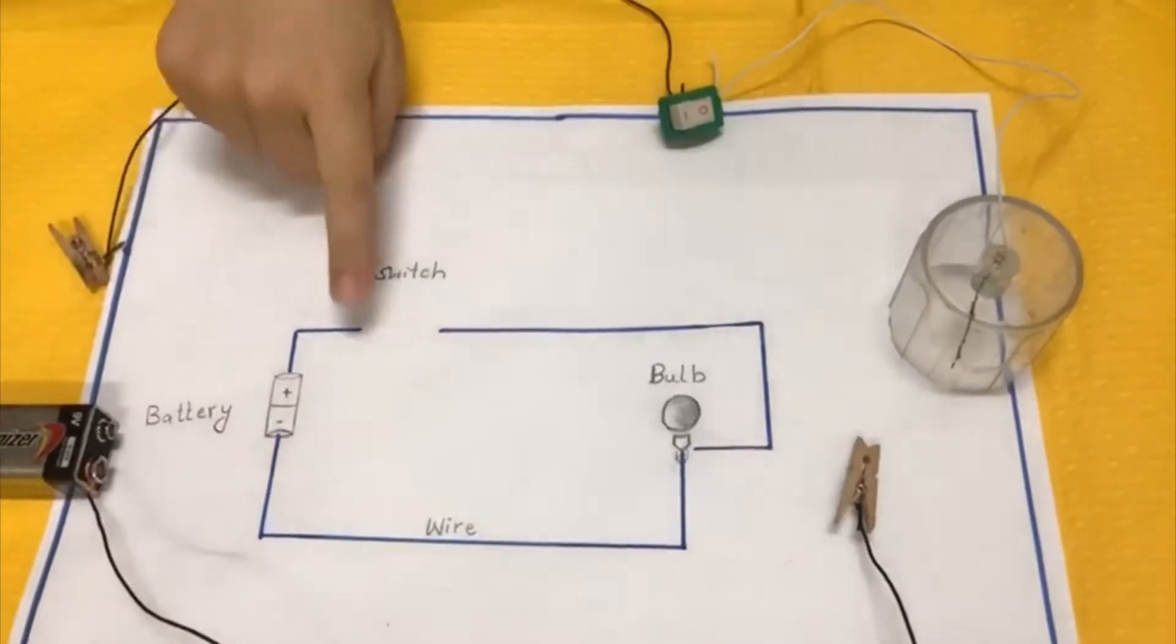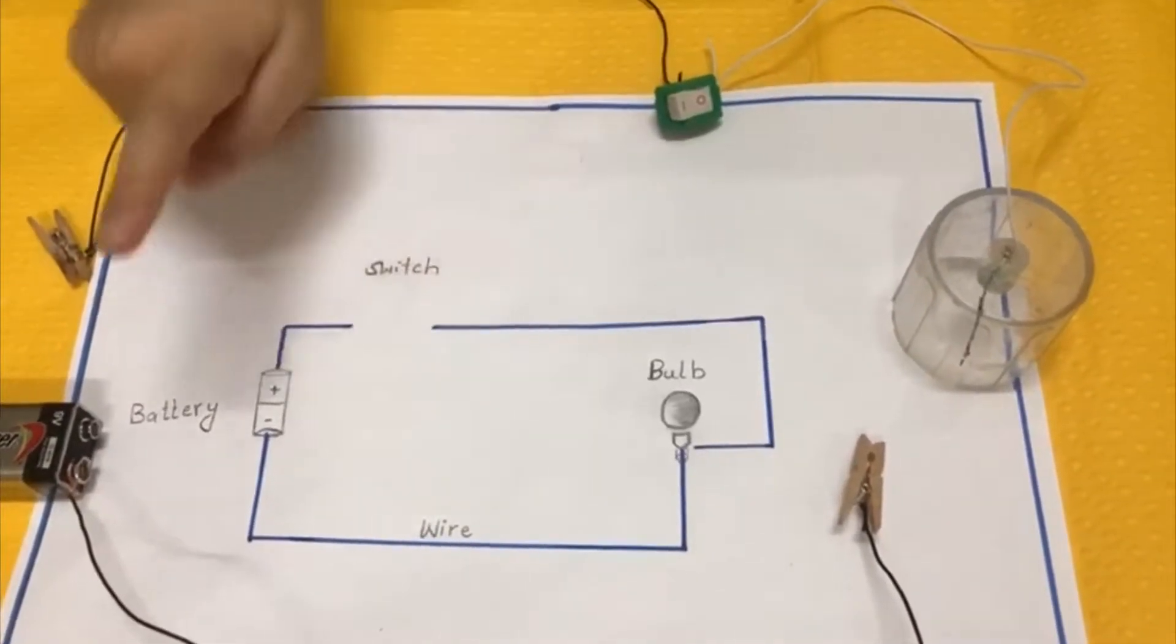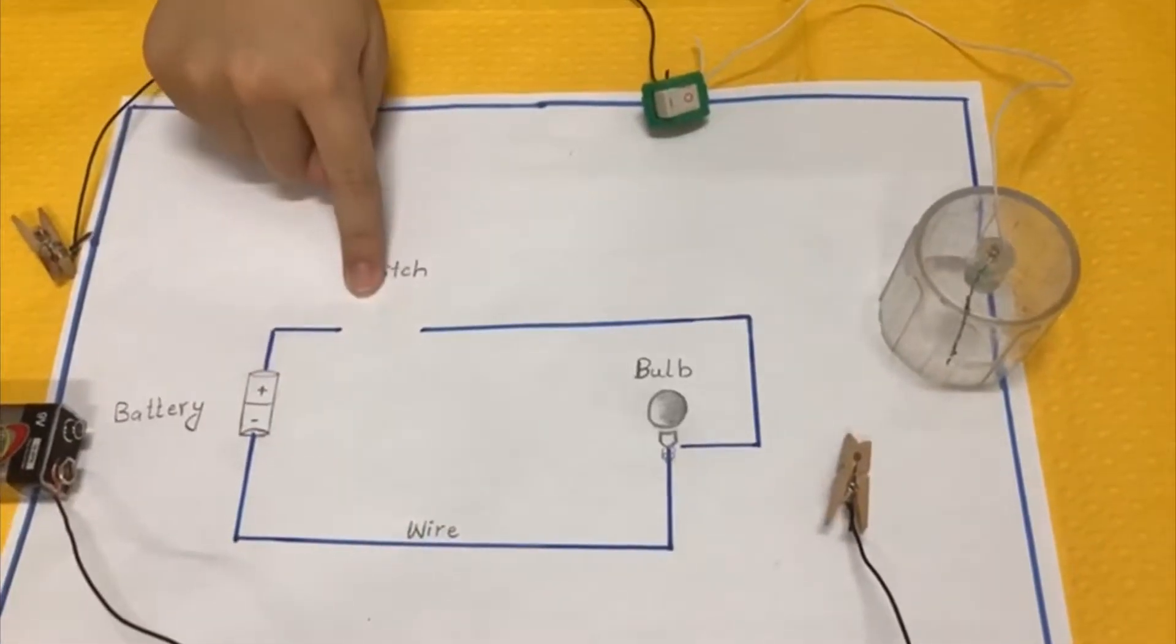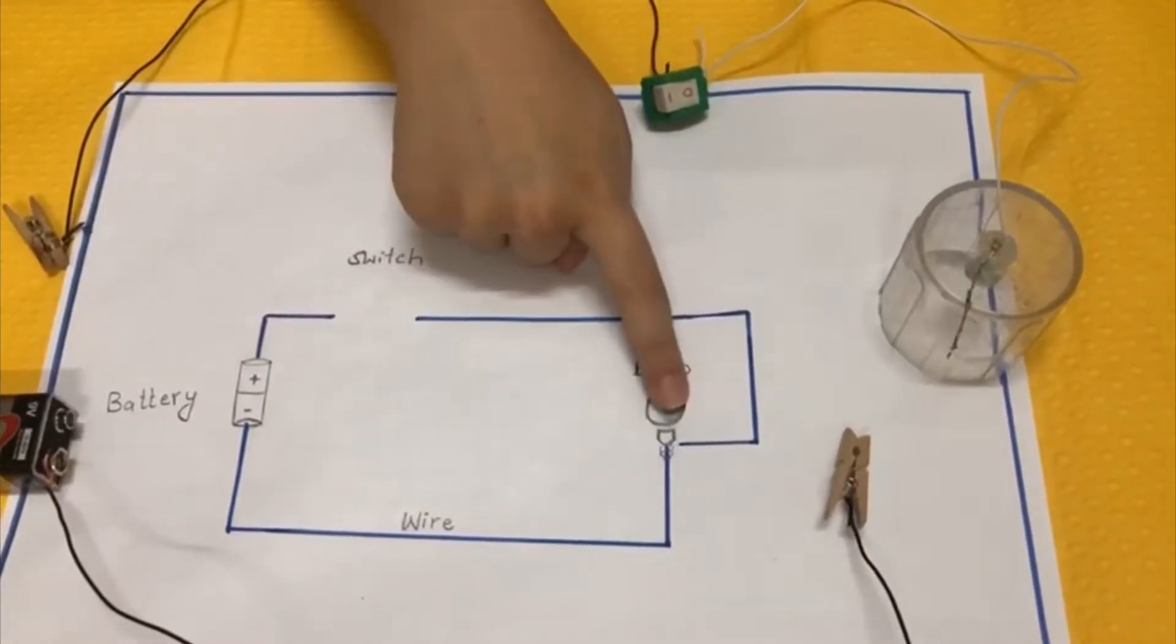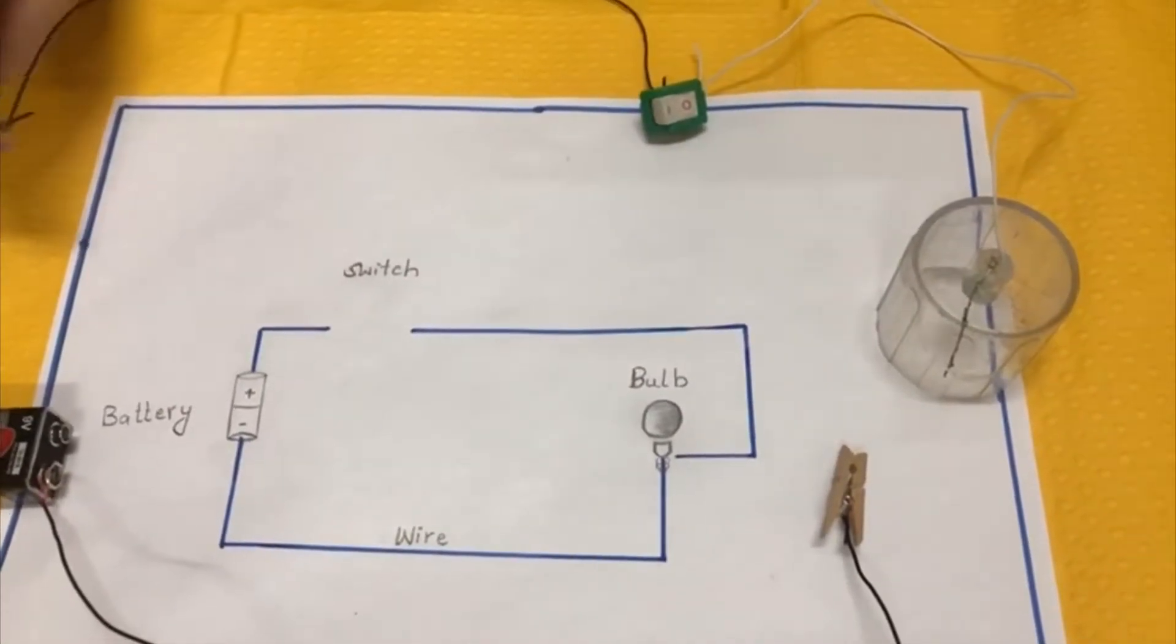First, we need to draw the circuit with a battery, a switch, a wire, and a bulb. Then you need to connect this.